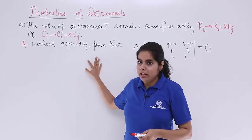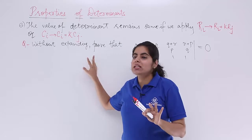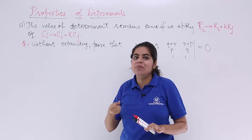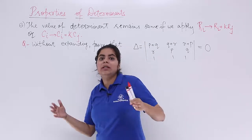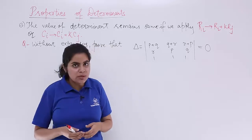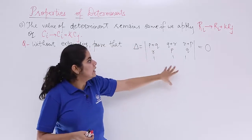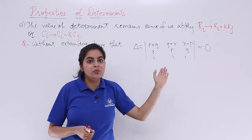The question is without expanding. Whenever you find these two words without expanding, it means that you have to not evaluate it fully. Rather, you have to use some properties. Prove that the del is equal to 0, the value is equal to 0.